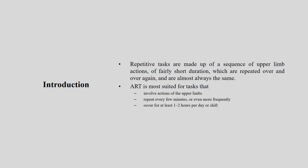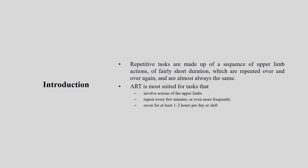Repetitive tasks are made up of a sequence of upper limb actions of fairly short duration. The IA has given a definition of repetitive task — tasks which are repeated over and over again and are almost always the same. ART is most suited for tasks that involve actions of the upper limb that repeat every few minutes or more frequently, and occur for at least one to two hours per day of a particular shift. If these conditions are present, then we can use this tool.